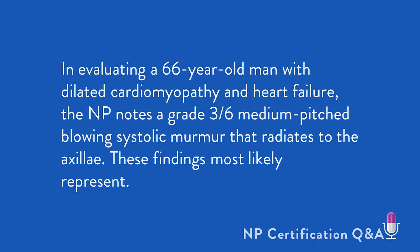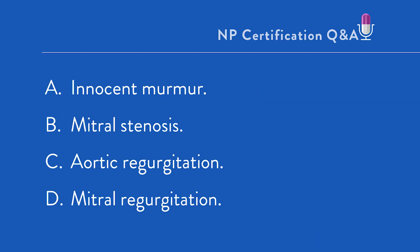In evaluating a 66-year-old man with dilated cardiomyopathy and heart failure, the NP notes a grade 3 over 6 medium-pitched, low-end systolic murmur that radiates to the axilla. These findings most likely represent: A. Innocent murmur, B. Mitral stenosis, C. Aortic regurgitation, D. Mitral regurgitation.